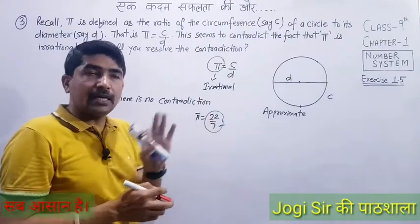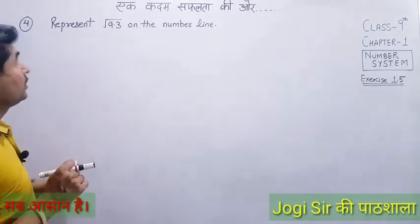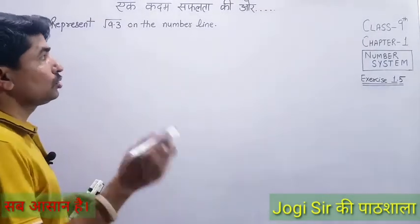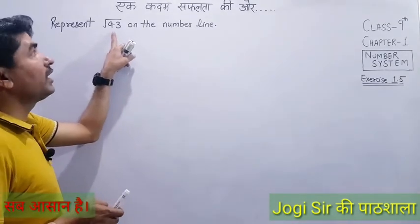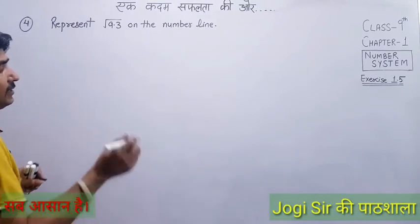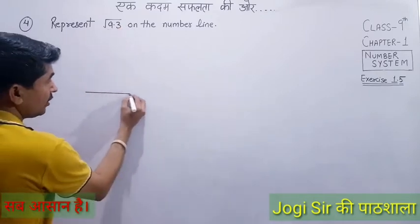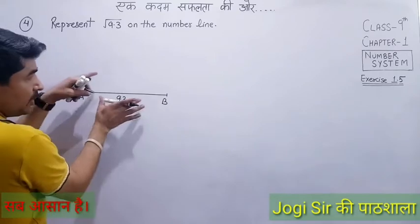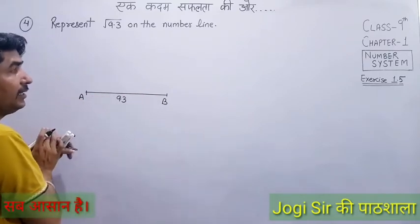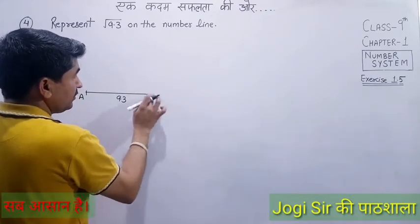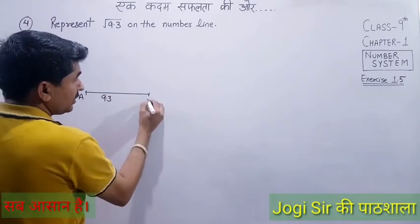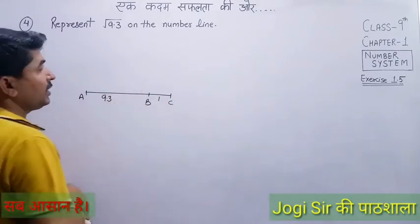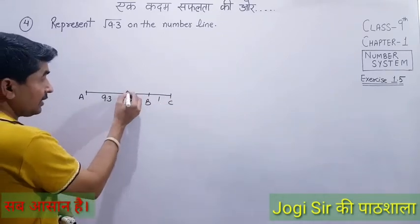That was easy! Now let's do the next question — Question 4: Represent √9.3 on the number line. We have done similar representations before with √2, √3, √4, √5, √6. Now how do we represent √9.3? First, mark 9.3 units — take AB = 9.3 on a scale. Then add 1 unit: BC = 1.